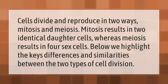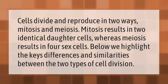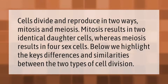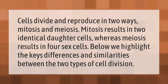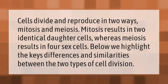Cells divide and reproduce in two ways: mitosis and meiosis. Mitosis results in two identical daughter cells, whereas meiosis results in four sex cells. Below we highlight the key differences and similarities between the two types of cell division.